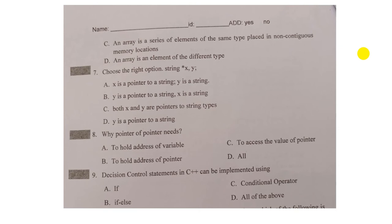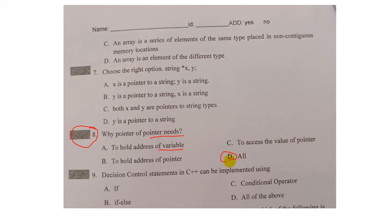Why is a pointer of pointer needed? The options are: A. To hold the address of a variable. B. To hold the address of a pointer. C. To access the value of a pointer. D. All.